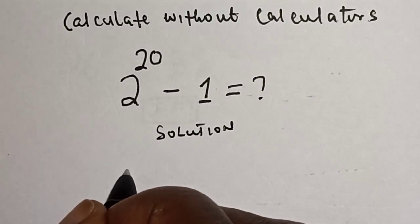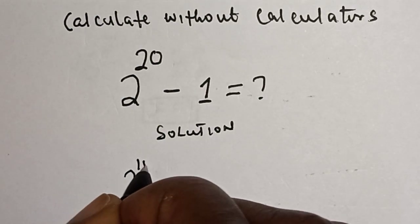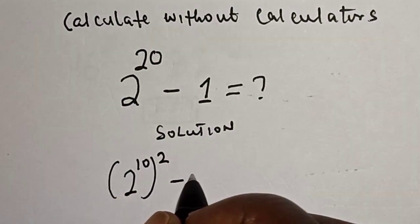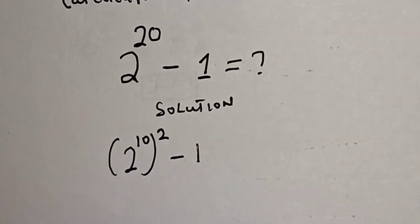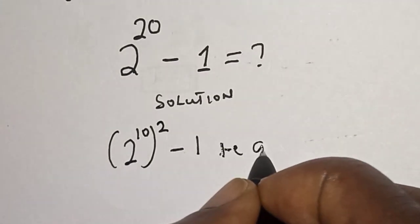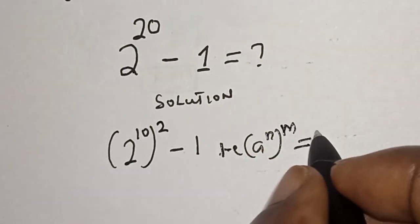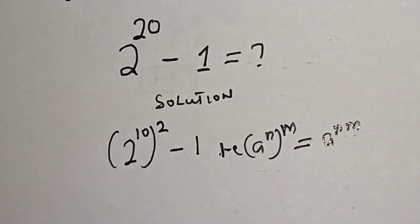2 raised to power 20 can be written as 2 raised to power 10, raised to power 2, minus 1. That is, if you have a raised to power n raised to power m, this is equal to a raised to power n times m.